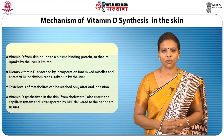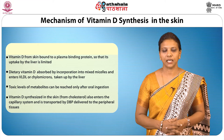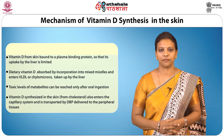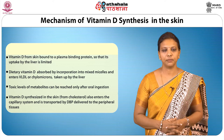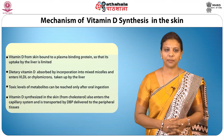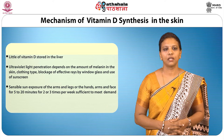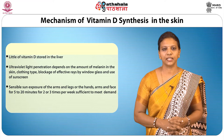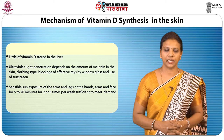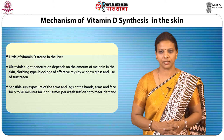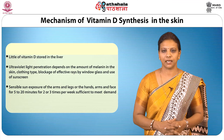Hepatic uptake is not limited by the plasma binding protein and toxic levels of metabolites can be reached only after oral ingestion. Vitamin D synthesized in the skin from cholesterol also enters the capillary system and is transported by DBP. Vitamin D attached to DBP is delivered to the peripheral tissues. Ultraviolet light penetration depends on the amount of melanin in the skin, clothing type, blockage of effective rays by window glass and use of sunscreen. Sensible sun exposure of the arms and legs, or the hands, arms and face, for 15 to 20 minutes, 2 to 3 times per week, is sufficient to meet the demand.